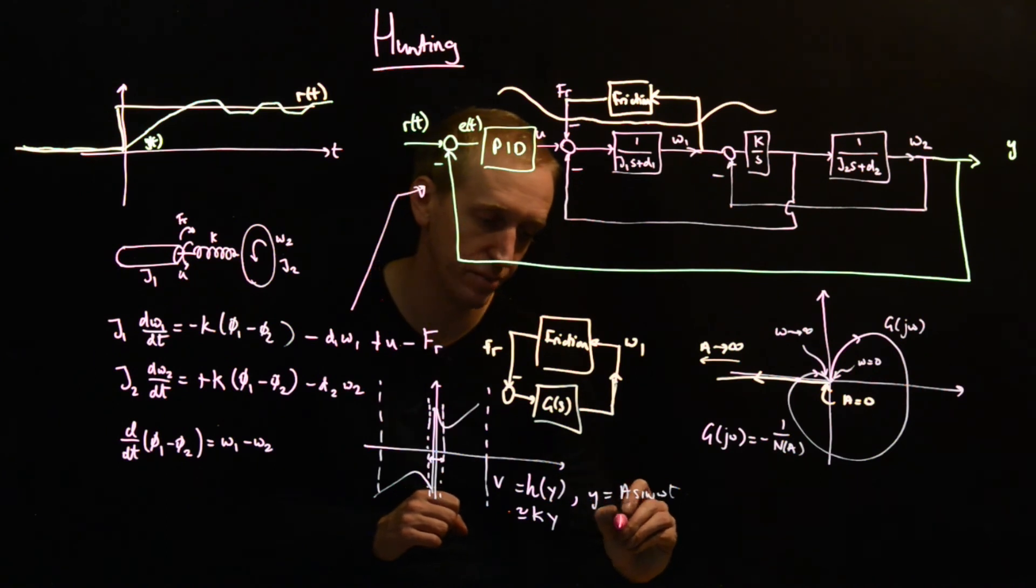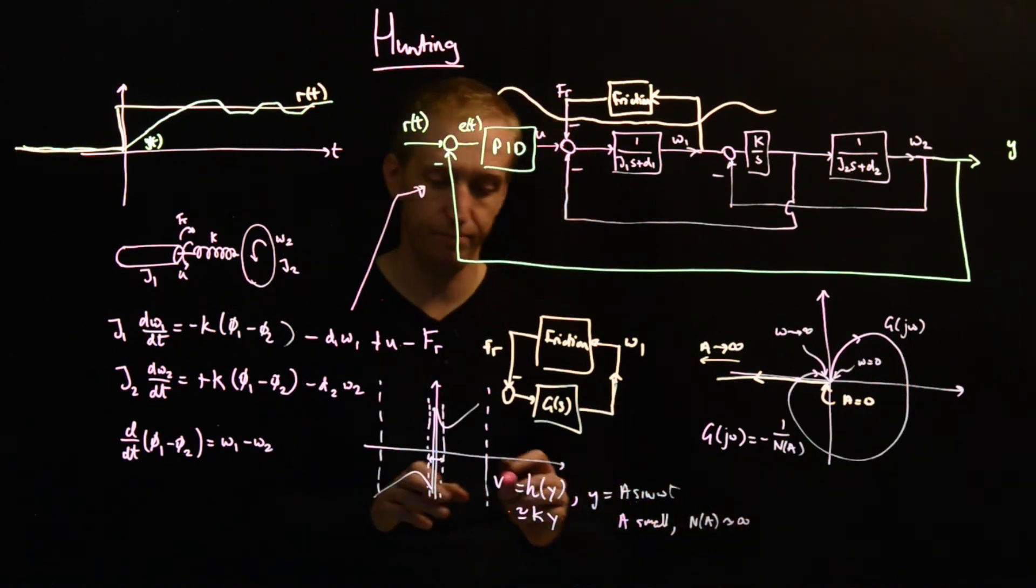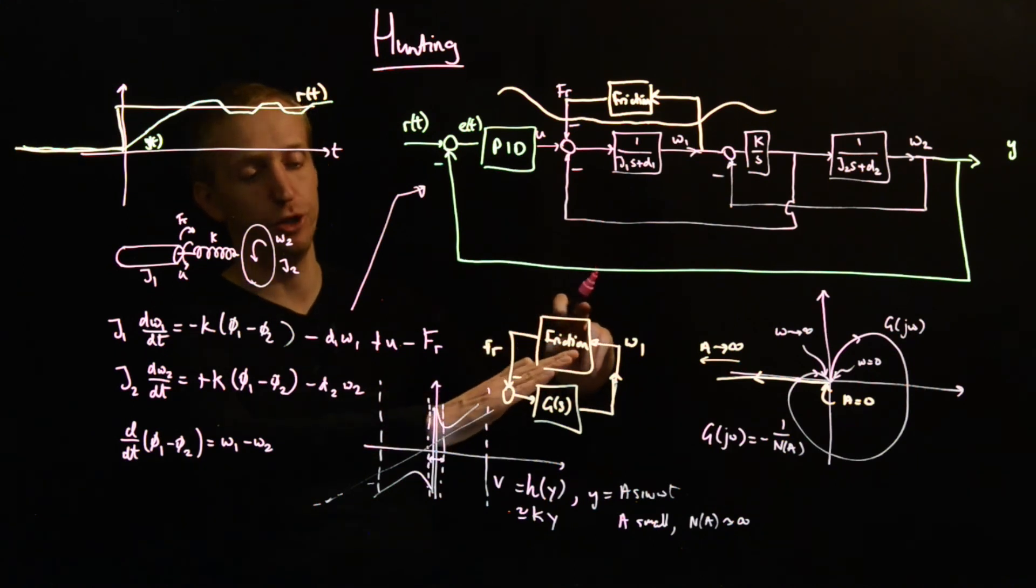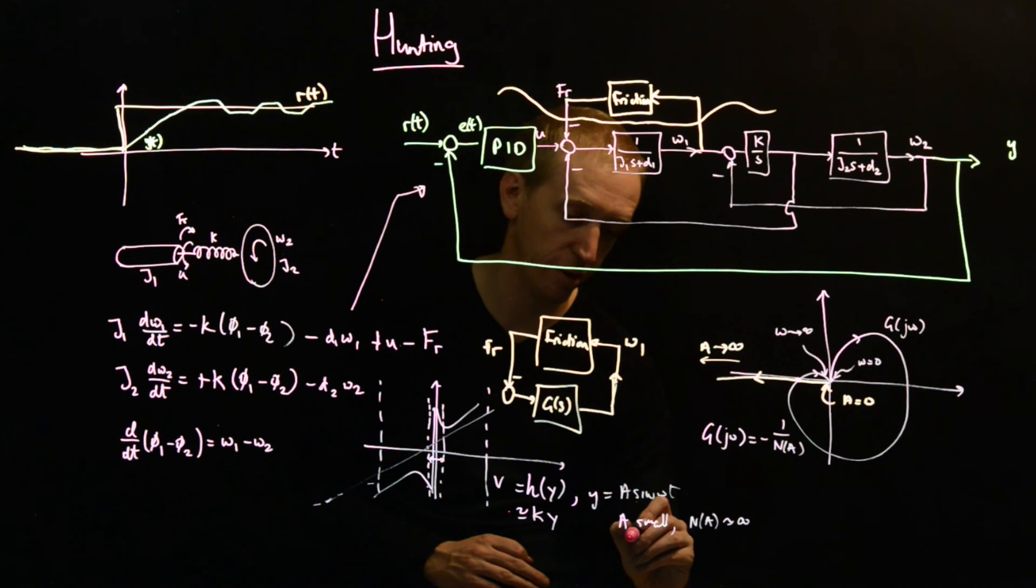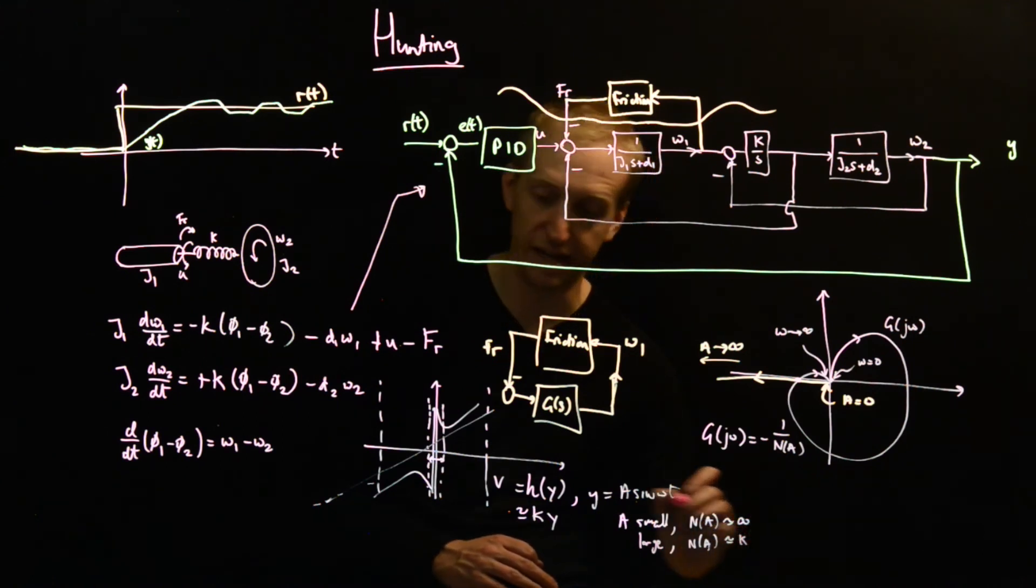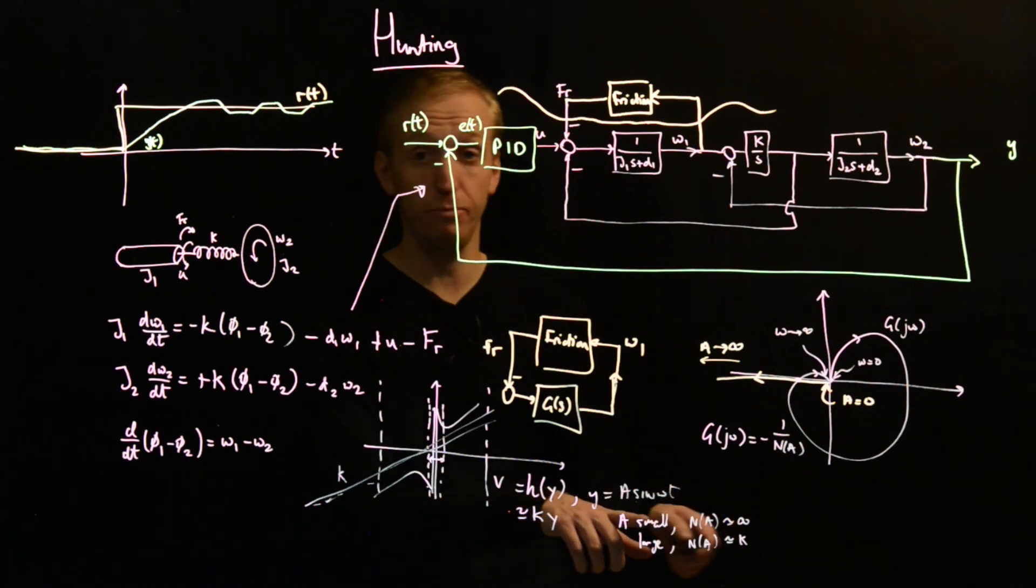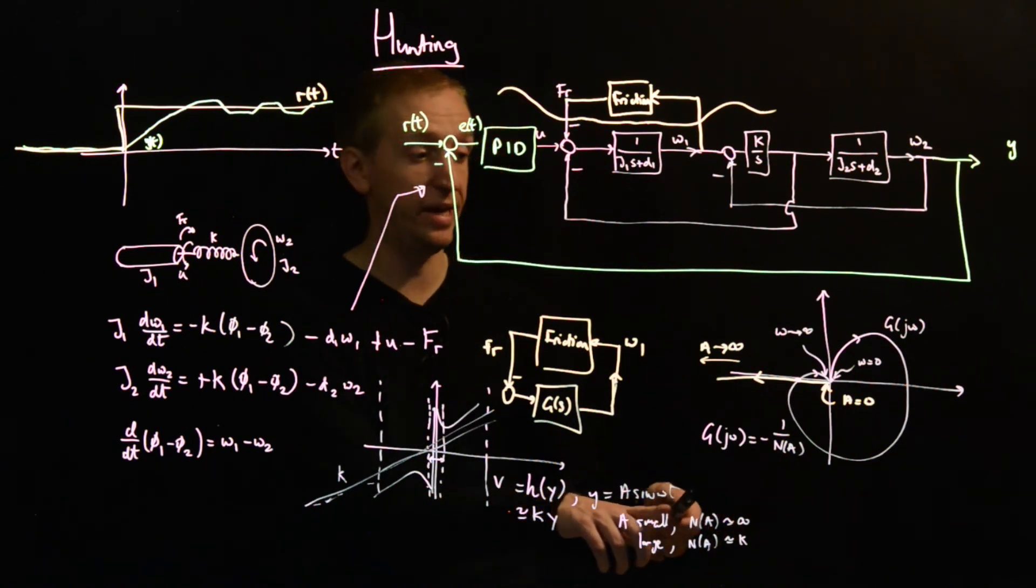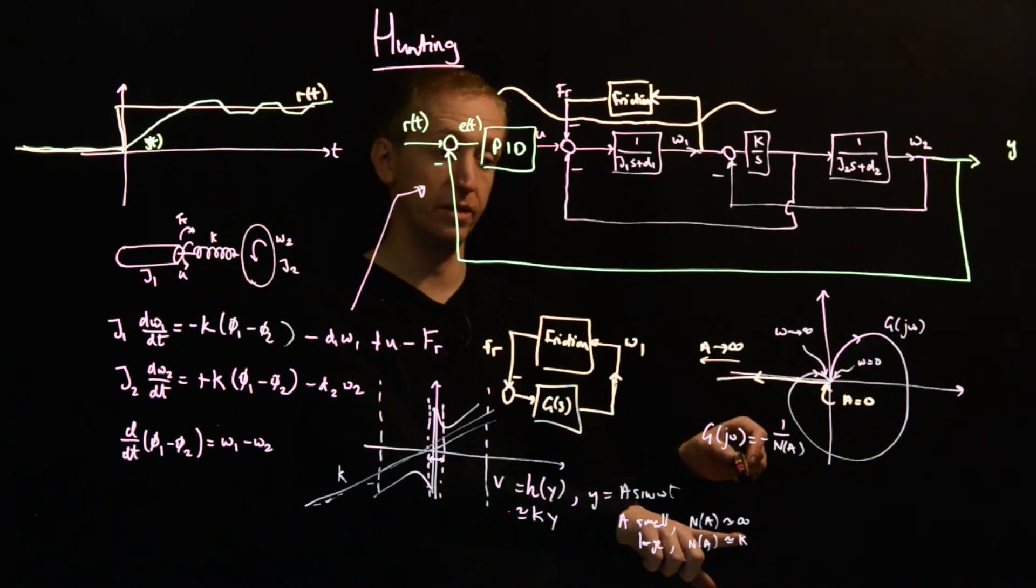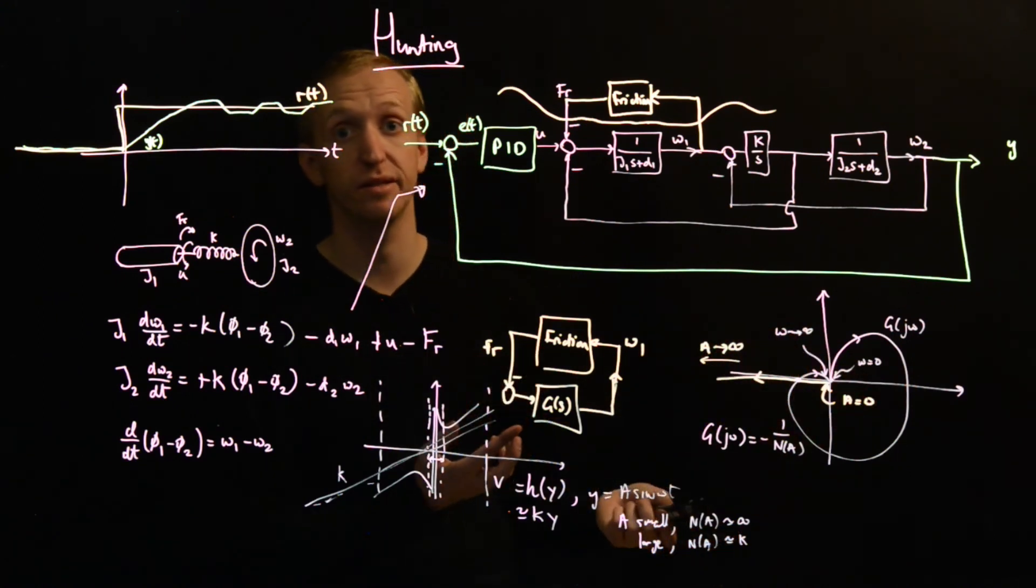And similarly, when A is large, your non-linearity starts to look like a sort of a linear relationship with some slope here. And so for A large, N of A is approximately K, where K is this sort of average slope here. And so now to plot my describing function curve, I just plot the points minus 1 over N of A. And so my curve will still start at the origin here, and it will still go this way. It won't go all the way to infinity this time. It'll just go to minus 1 over K instead. But that's probably still enough to get us to cut through the Nyquist curve and predict a stable limit cycle.